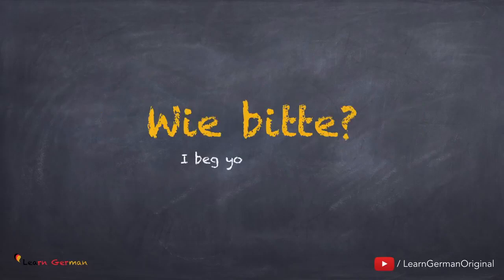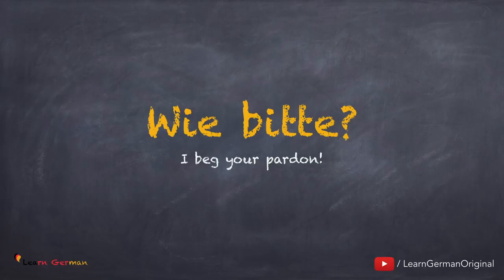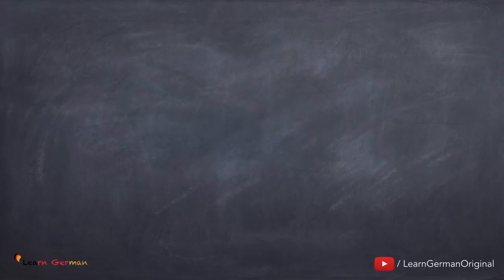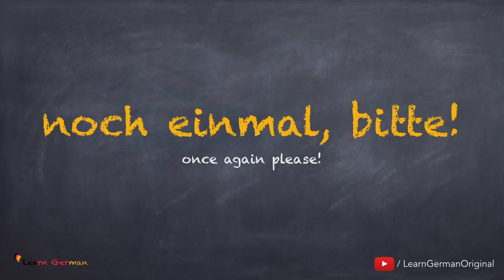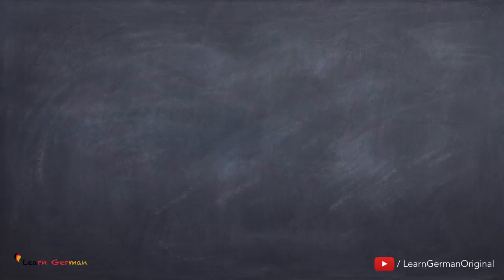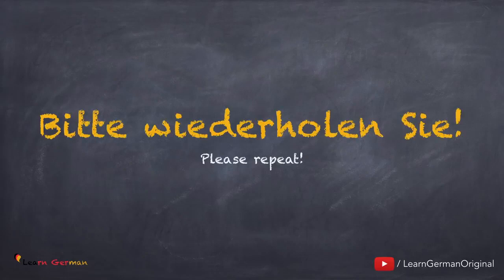Let's move to the next one: Wie bitte? If I don't understand what someone is saying and I want them to repeat, I would say, Wie bitte? Since this is a question, it is very important to use the correct intonation. An alternative to Wie bitte? is Noch einmal bitte — note the change in intonation since this is a request, not a question. A more formal way of asking someone to repeat is Bitte wiederholen Sie.